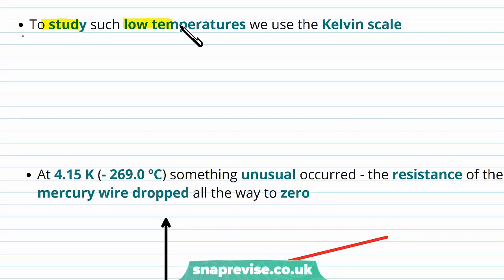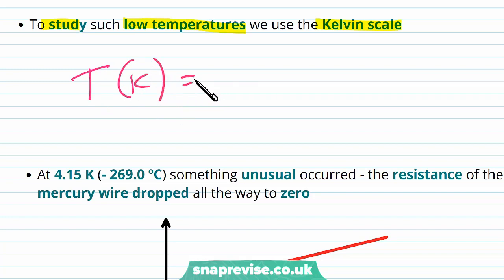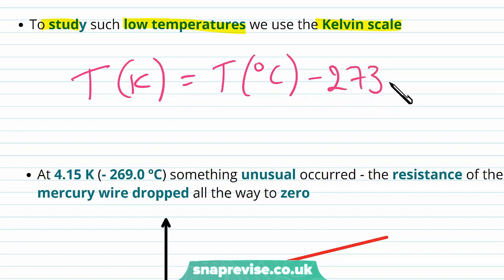To study such low temperatures we use the Kelvin scale. To convert, the temperature in Kelvin is equal to the temperature in degrees Celsius plus 273.15. We'll cover the Kelvin scale in more detail in thermal physics; for now, all we need to know is that we use the Kelvin scale to study such low temperatures.